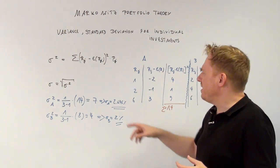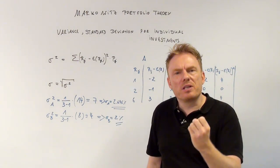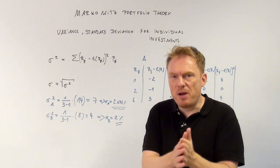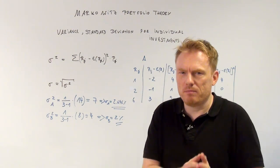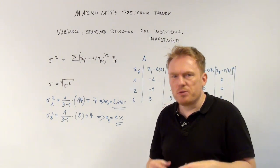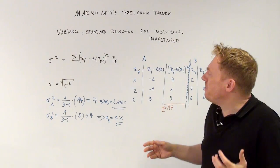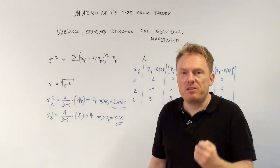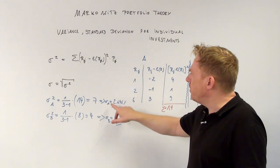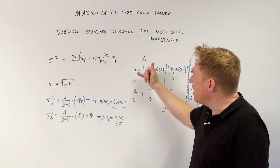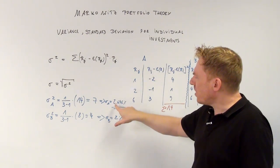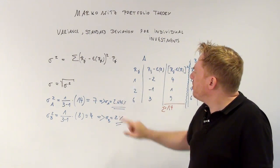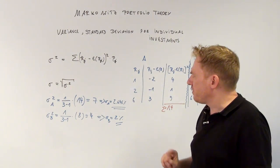The variance is in percent squared — that's the way it is, and that's why we look at the standard deviation, not at the variance. The variance is just an intermediate step; there's no use in computing the variance only. We need to always compute the standard deviation. So given those numbers one to six, there's a standard deviation of 2.646 percent.